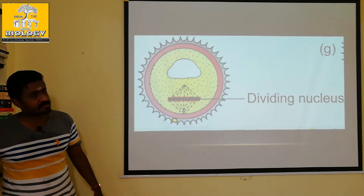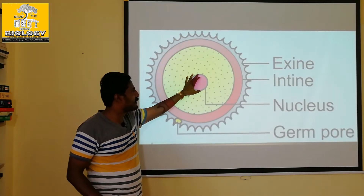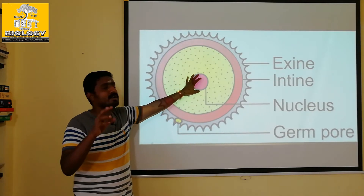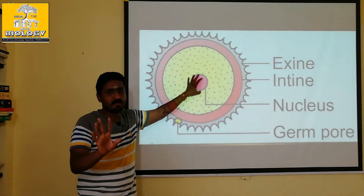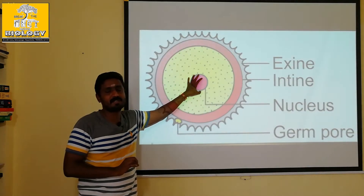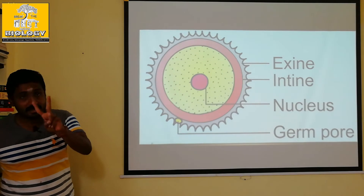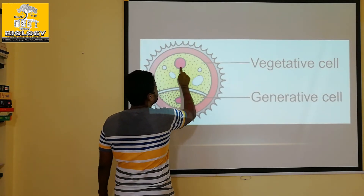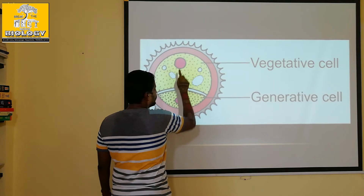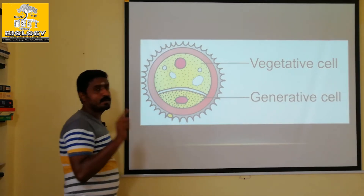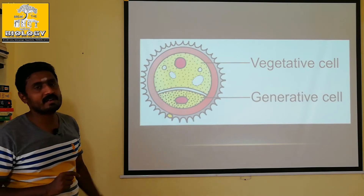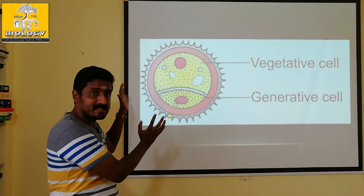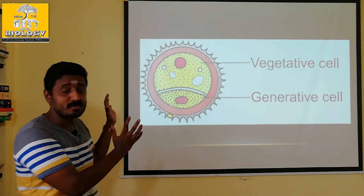In the microspore, one nucleus becomes two nuclei. One nucleus is called the vegetative nucleus, and another nucleus is called the generative nucleus. In the microspore, the pollen grain is formed. We will talk about what happens to the pollen grain structure further.